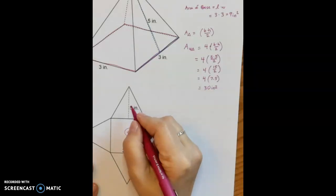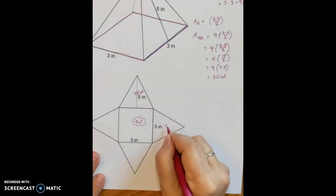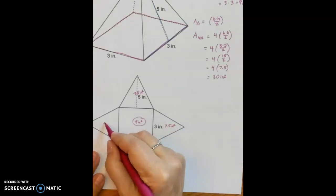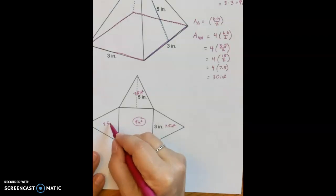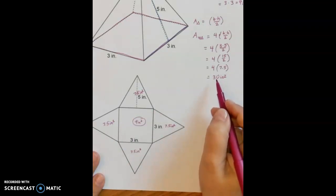So what that really means is that each one of these triangles has an area of 7.5 square inches, and when I multiply that 7.5 times 4, I now know that 30 inches squared is the total of all four of those triangular sides.